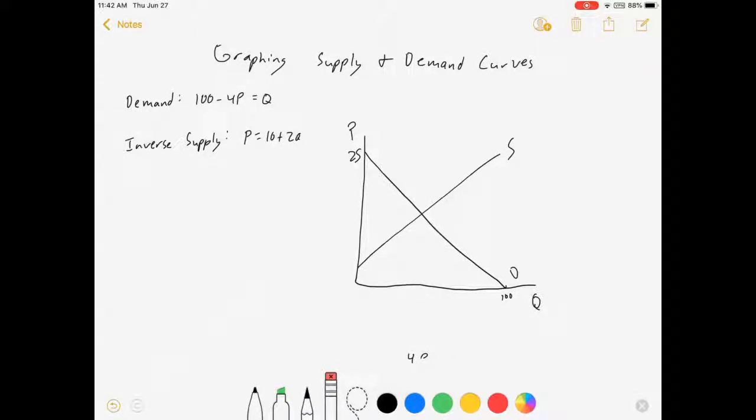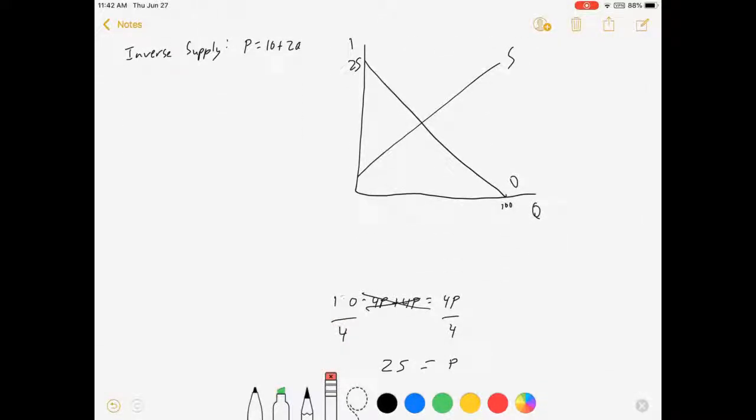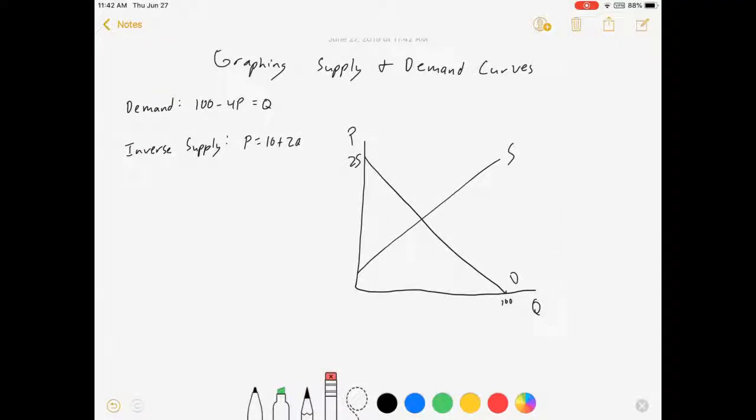Now to graph the supply curve, I'm going to do something very similar, but with the other graph. I want to find the intercept of this thing on the vertical axis. Well, it's already in inverse form, so that's actually really easy. Just like for finding the vertical axis for demand, I say Q equal to zero, I'm going to do the same for the supply, but it's going to be easier now because it's already in inverse form. P equals 10 plus 2Q, substitute Q equals zero, P equals 10 plus 2 times zero is 10. We got the intercept there.